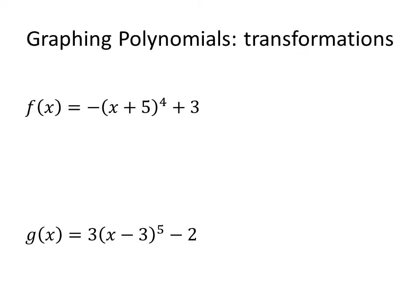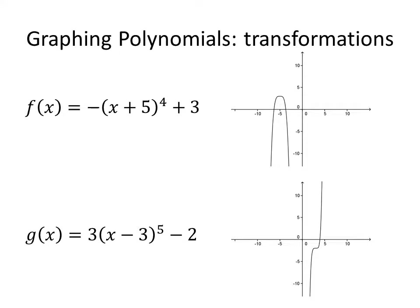If we want to graph these polynomials, we can use the transformations we've already learned. For example, one function has a reflection across the x-axis, a shift to the left by 5, and a shift up by 3 — so it looks like x to the fourth, moved left, up 3, and flipped to open down. The next function, g of x equals 3 times (x minus 3) to the fifth minus 2, has a stretch by a factor of 3, making it skinnier, a shift 3 to the right, and down 2.